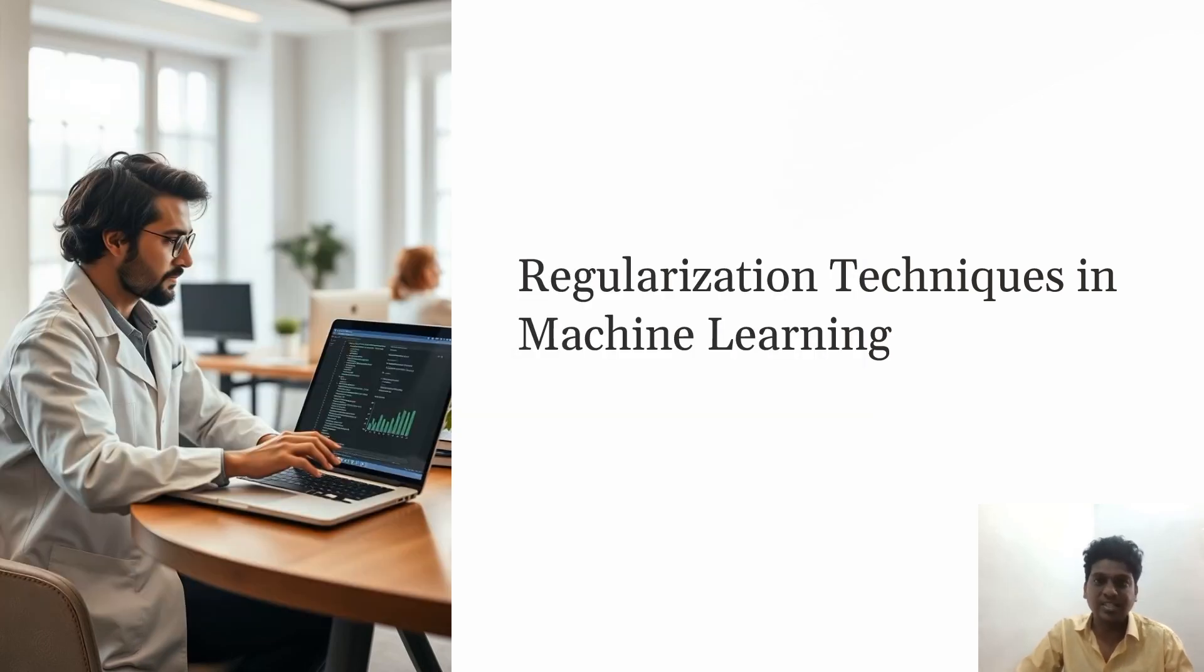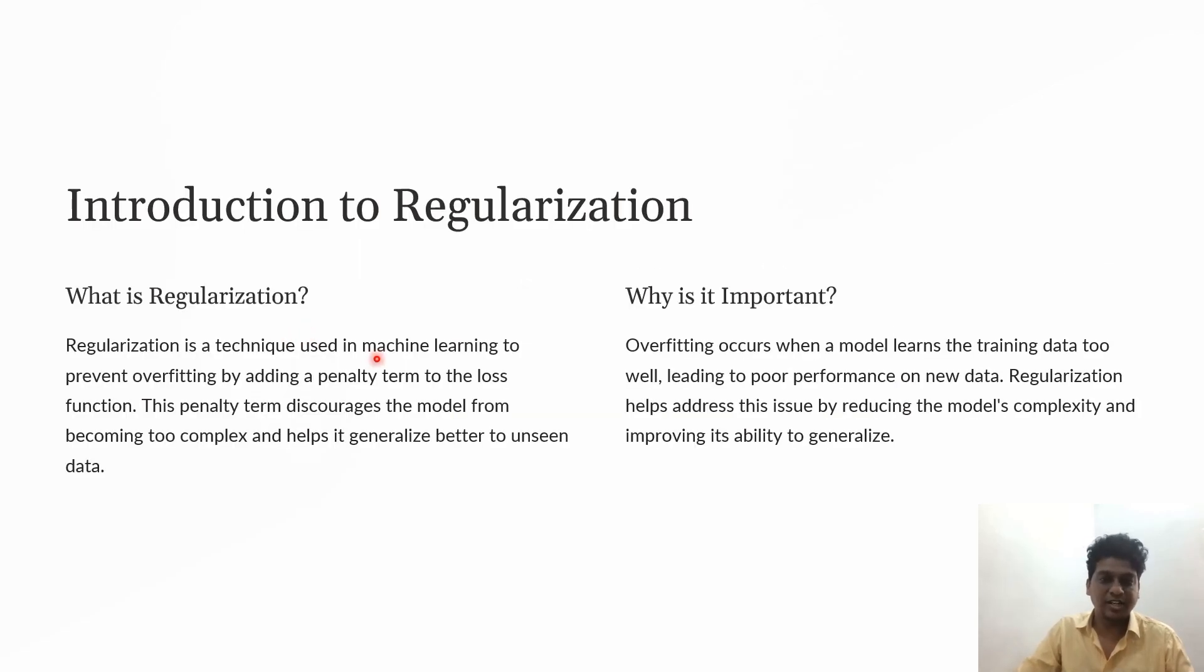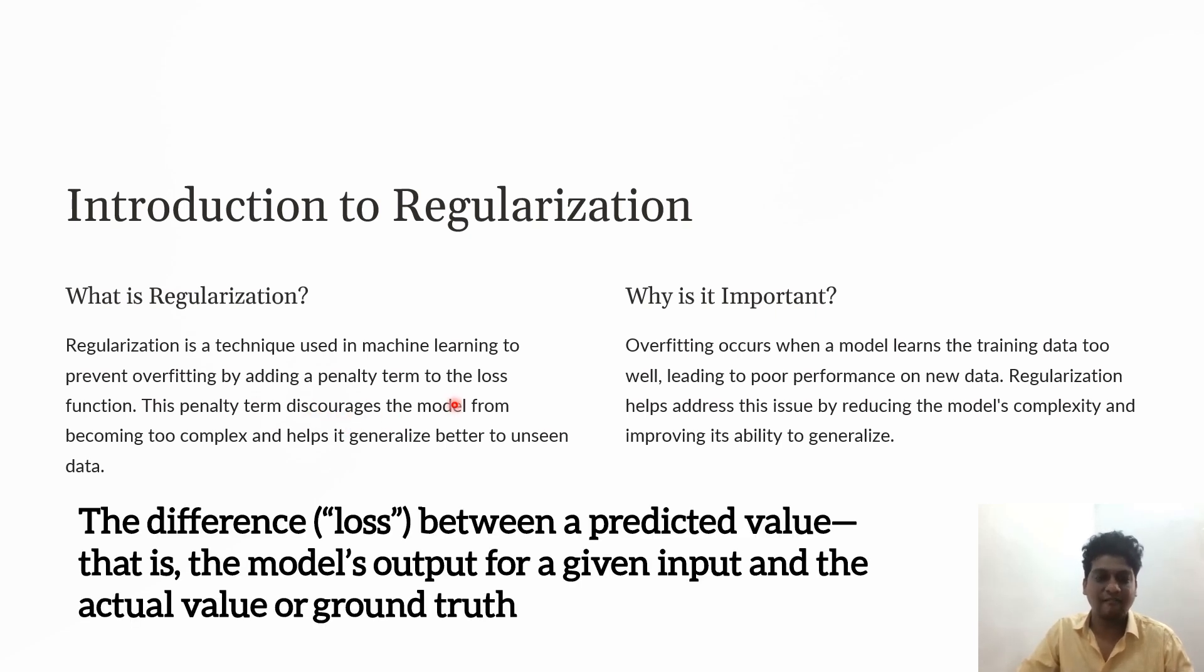Regularization helps prevent overfitting. In machine learning, to prevent overfitting, we add a penalty term to the loss function, which is the difference between actual and predicted values.